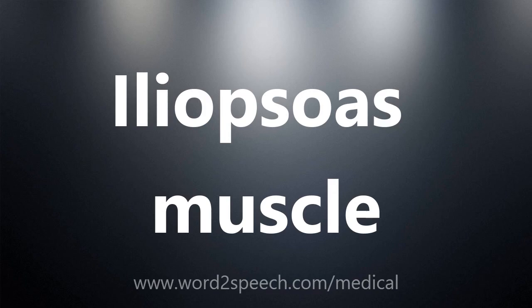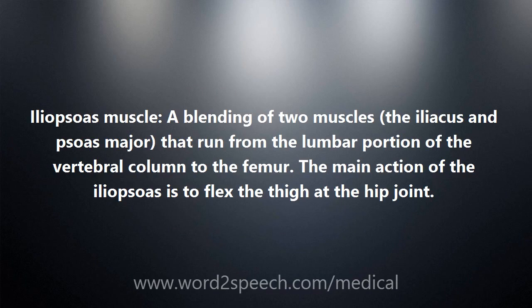Iliopsoas Muscle: a blending of two muscles, the iliacus and psoas major, that run from the lumbar portion of the vertebral column to the femur. The main action of the iliopsoas is to flex the thigh at the hip joint.